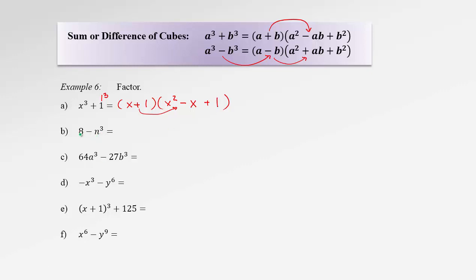In the next example, 8 is 2 cubed, so our terms under cubes are 2 and n with a minus sign — this is a difference of cubes. In the short bracket: 2 minus n. In the long bracket: first term squared is 4, switch the sign to plus, product of the two terms is 2n, then add last term squared which is n squared. Result: (2 minus n)(4 plus 2n plus n squared).